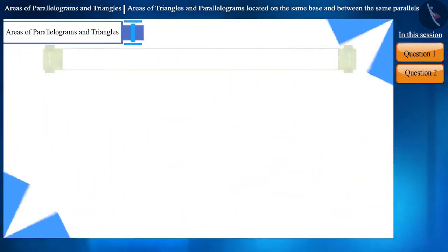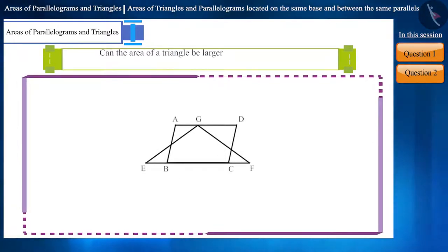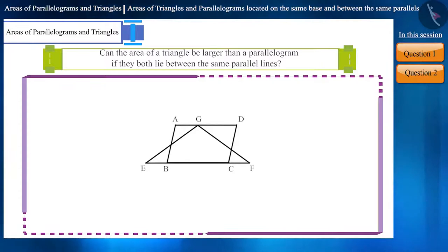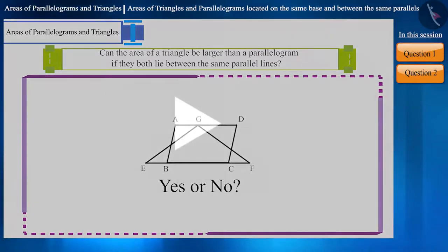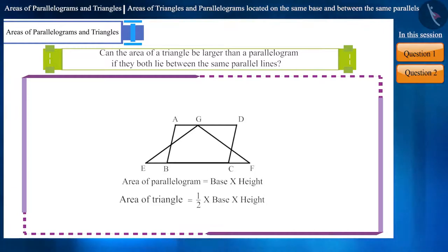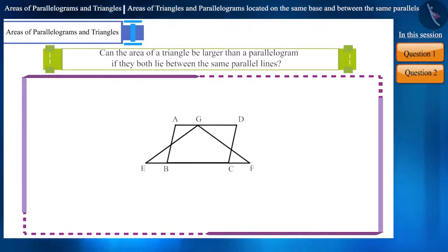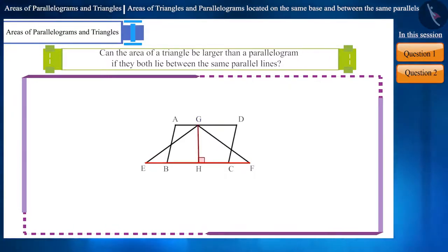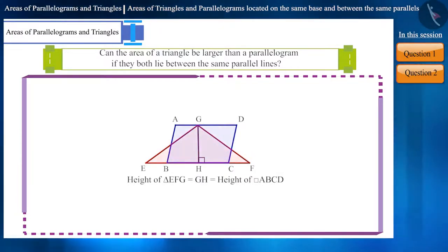Let's move to the next question: Can the area of a triangle be larger than the area of a parallelogram if they lie between the same parallel lines? Pause the video and think of the answer. To find the answer, we will use the formulas for the area of a parallelogram and a triangle. First, let's draw a perpendicular from point G on side EF and call it GH.